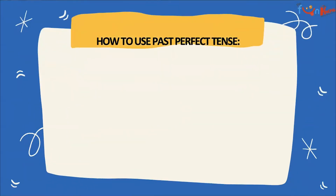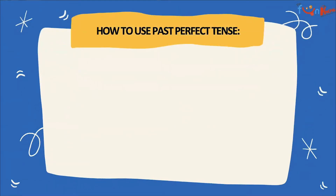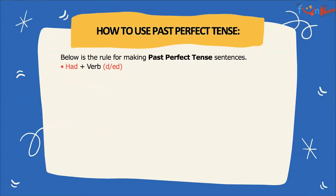Now, how do we construct a past perfect tense sentence? The rule is: we use 'had' plus the verb with 'd' or 'ed'.